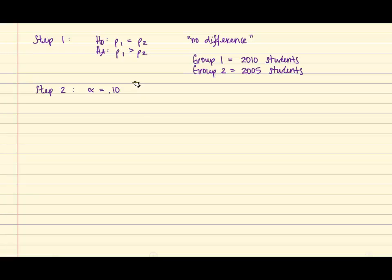For step 3, using the values from the scenario, make note of the sample proportion for each group. Recall, the students sampled in 2010 must be group 1 and the students sampled in 2005 must be group 2. Again, be careful not to confuse the two groups.